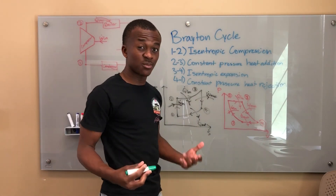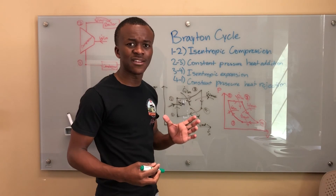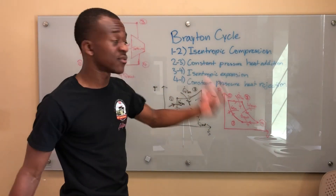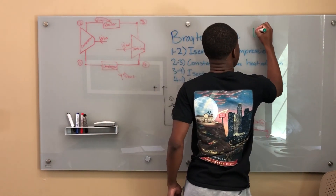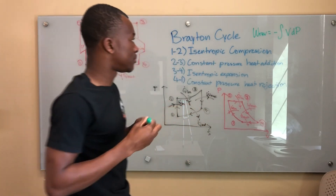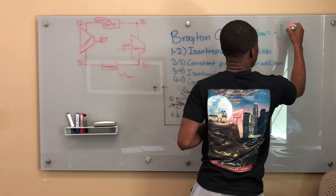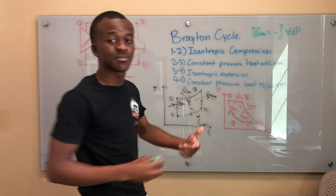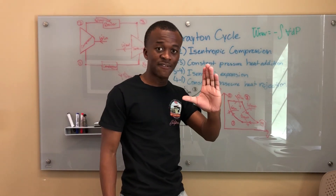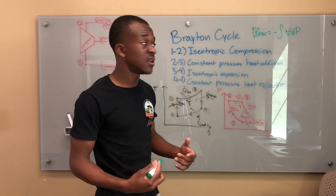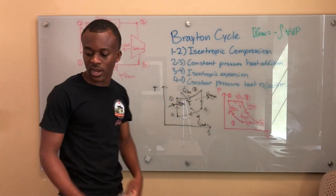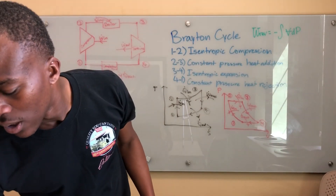There's something called reversible work for single-stream steady-state devices. We have one inlet and one outlet for each turbine and compressor, it's a steady-state process, and it's reversible because they're isentropic. The reversible work equation gives you W equal to the negative integral of V dP. For specific work it's the integral of small v dP, and at constant volume you can pull out V to get V times delta-P.